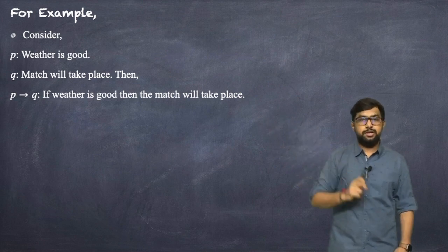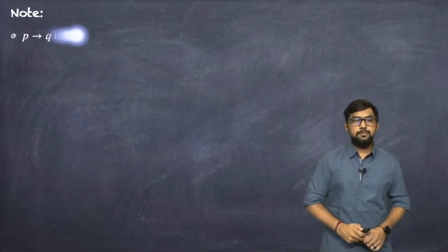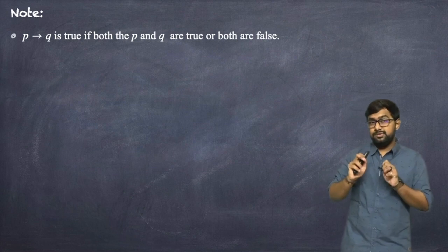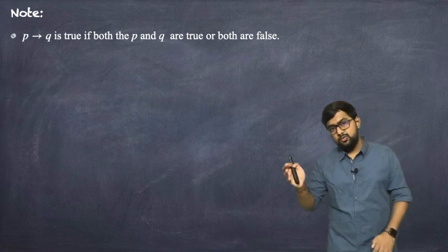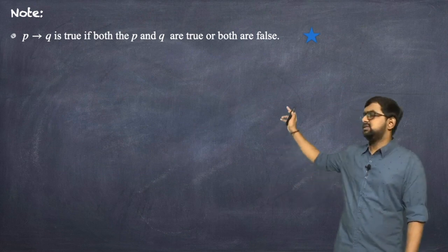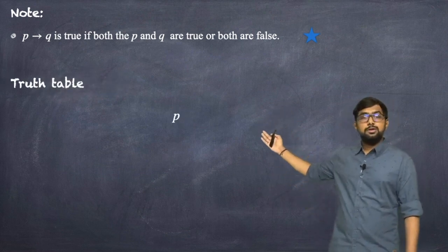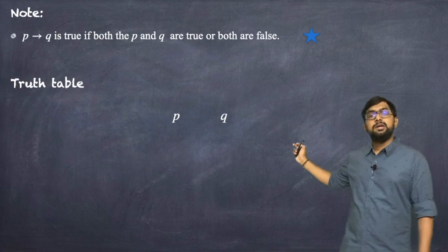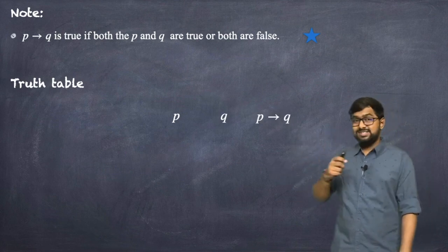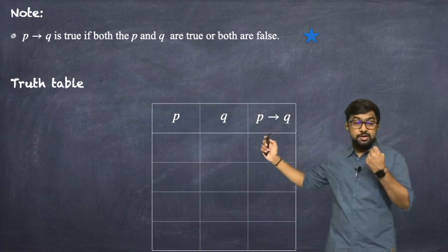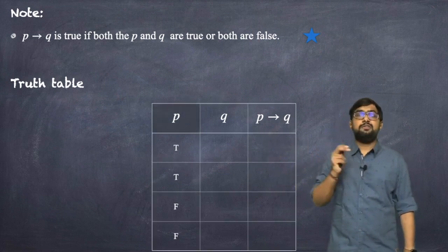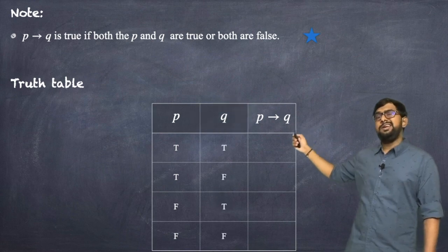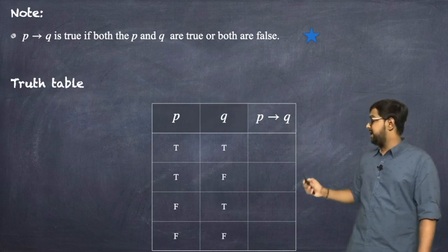Note that P implies Q is true if both P and Q are true, or if both are false. Now let's construct the truth table. Since it is not a unary connective we have two statements P and Q, giving four possibilities: T T, T F, F T, and F F.